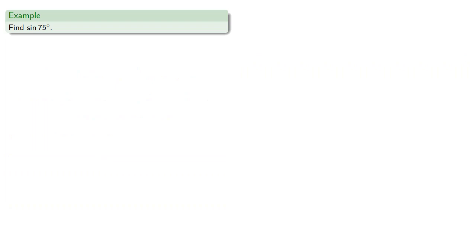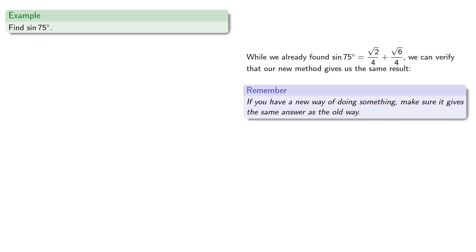So let's find sine of 75. Wait, didn't we just find that? Well, while we already found sine of 75, we can verify that our new method gives us the same result. As a general rule, if you have a new way of doing something, make sure it gives the same answer as the old way.